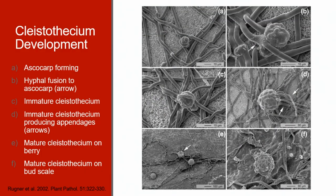These images show the developmental stages of a Kleistothesium. Panel A shows the ascocarp beginning to form by the fusion of hyphae. Panel B is a close-up of how the hyphae fused to the ascocarp as shown by the arrow. In panels C and D, an immature Kleistothesia is shown and in D you can see the immature Kleistothesium beginning to produce appendages as shown by the arrows.